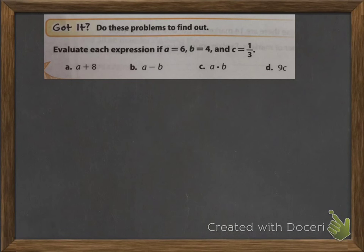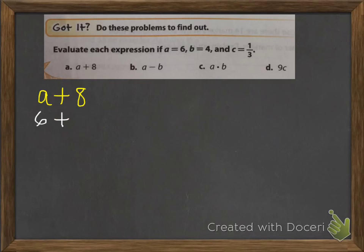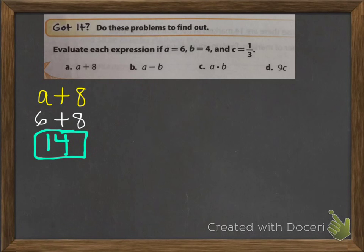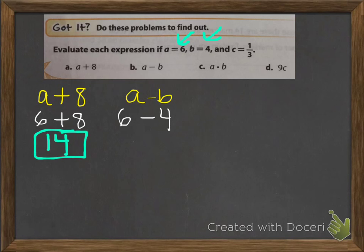Now pause the video to work on A, B, C, and D. For A, the original problem is A plus 8; substitute 6 for A, so 6 plus 8 equals 14 — put a box around your final answer. For B, the original problem is A minus B; substitute 6 for A and 4 for B — from the given values A equals 6 and B equals 4 — so 6 minus 4 equals 2. Put a box around that.